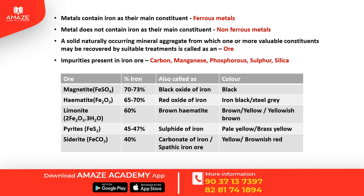Pyrites has an iron content of 45 to 47% and is also called sulphide of iron. Its color is pale yellow or brass yellow. Siderite has an iron content of 40% and is also called carbonate of iron or spathic iron ore. Its color is yellow or brownish red.